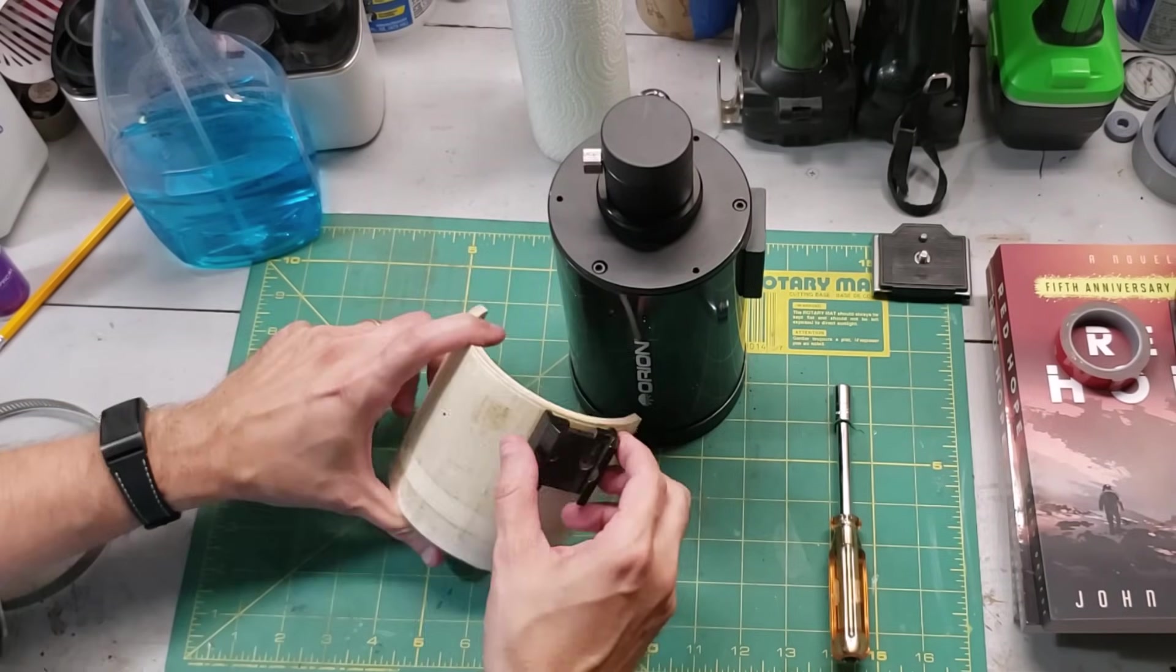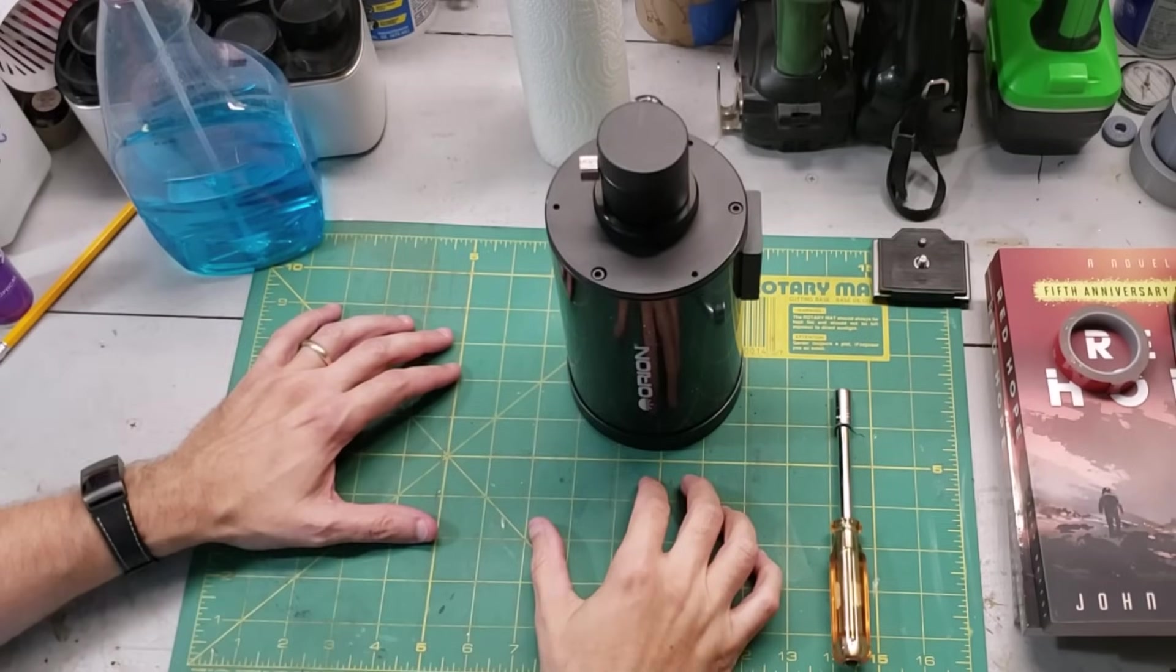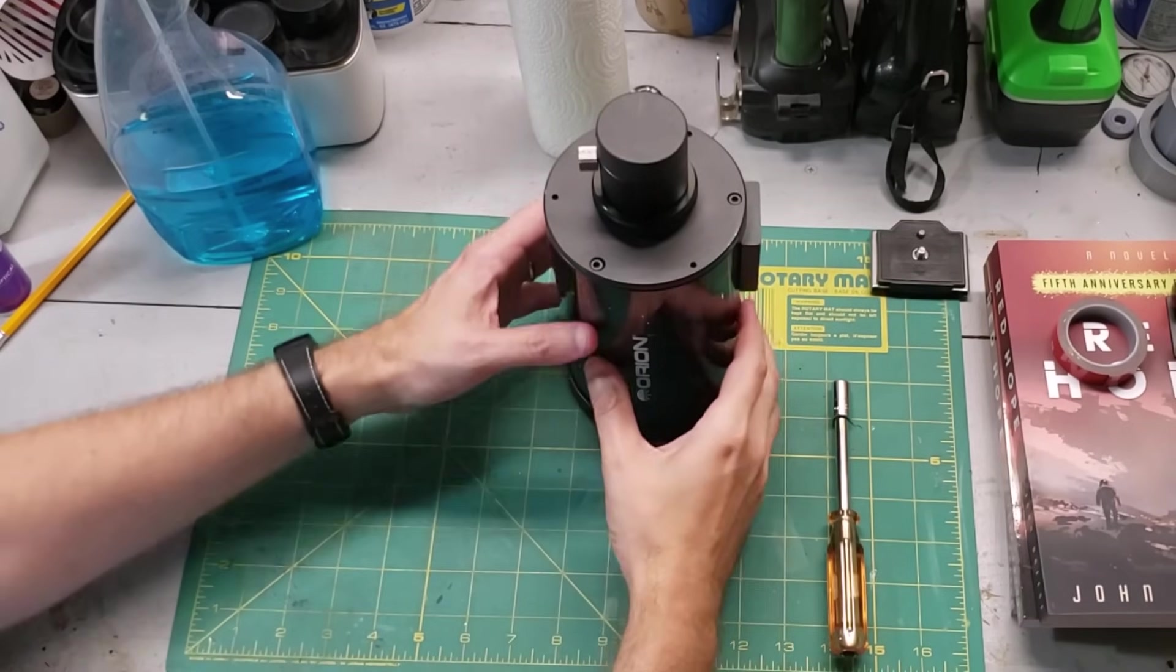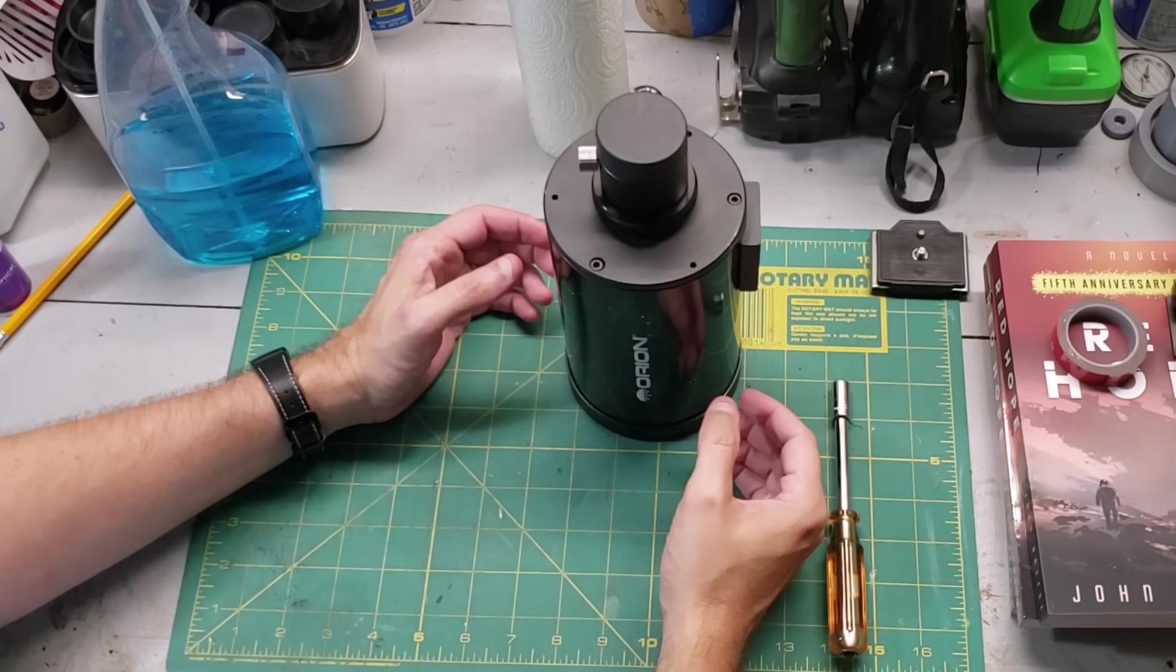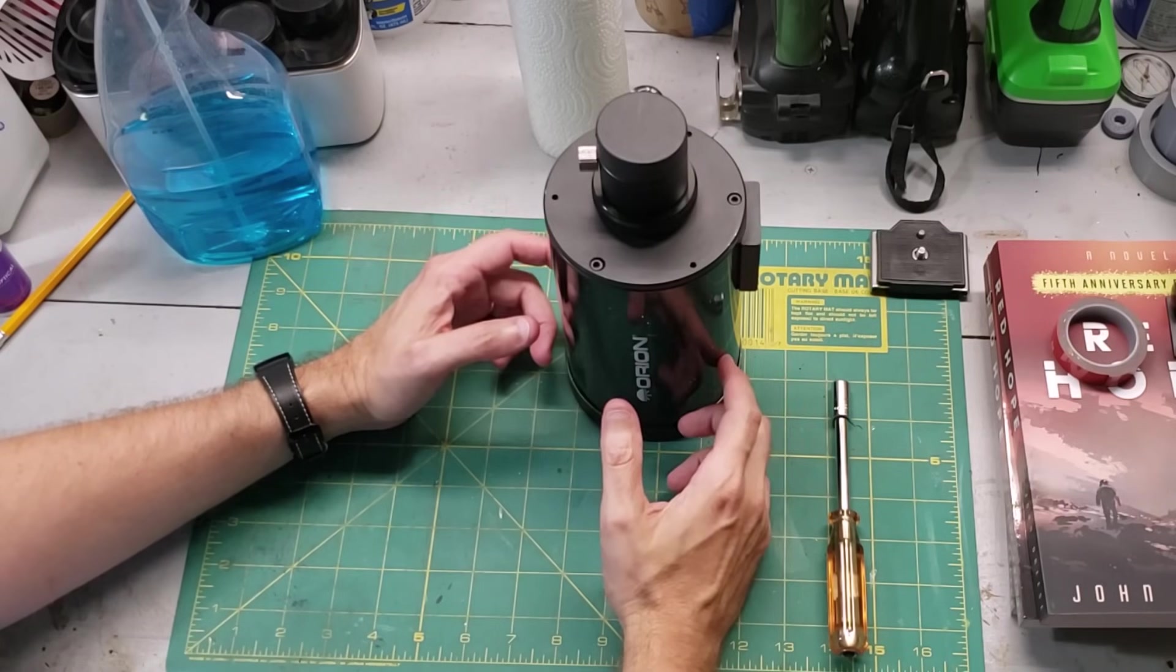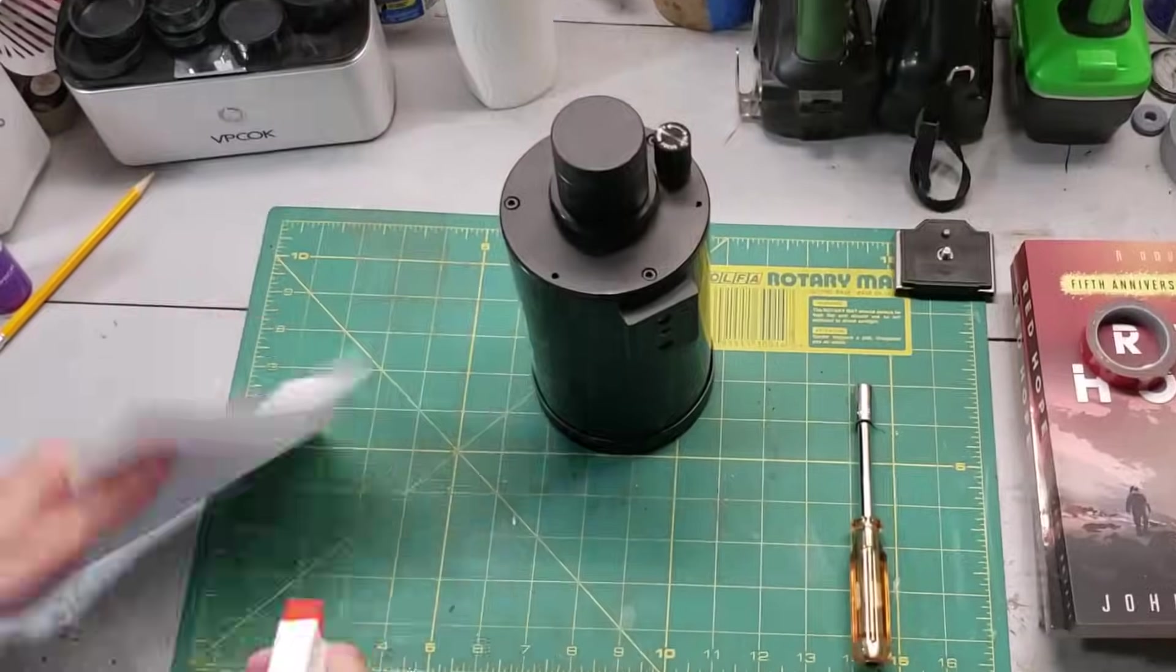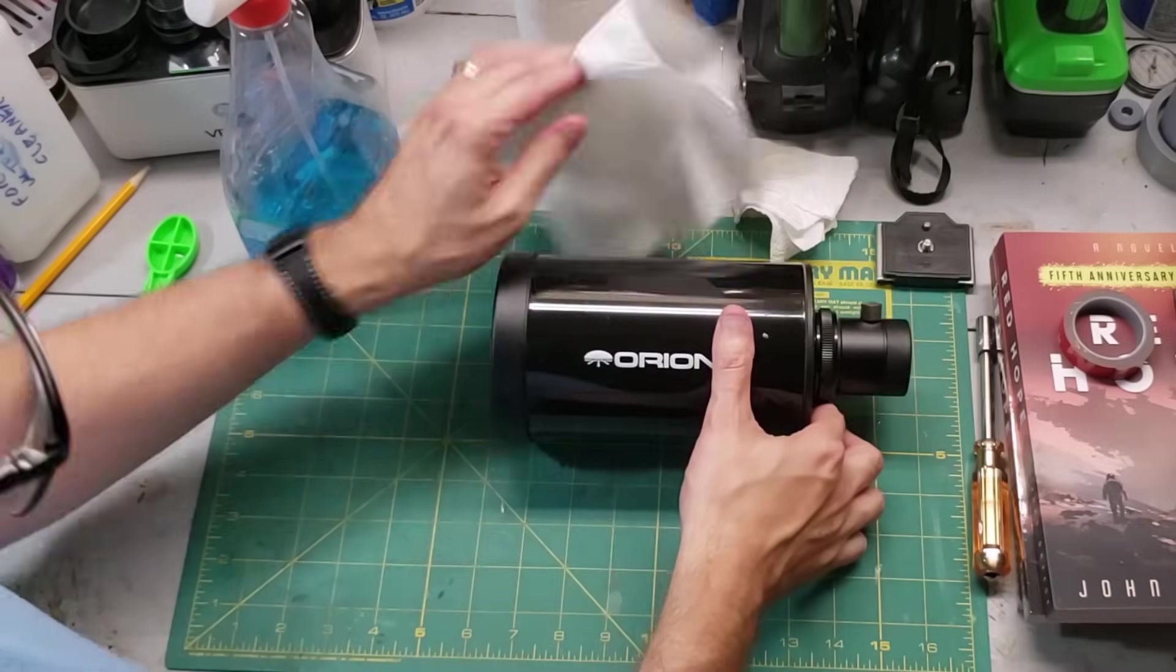I can reuse this on another telescope, so this is still salvageable. Step two is to really scrub this clean so that the double-stick tape will stick to the surface. Also, the previous owner was a smoker, so we're going to need to really scrub it to remove the tar.